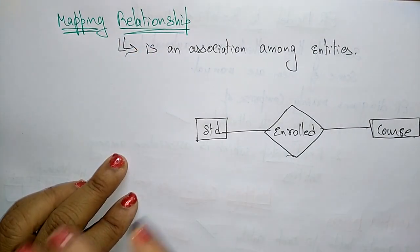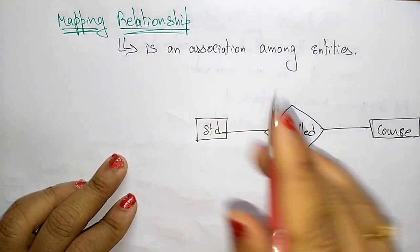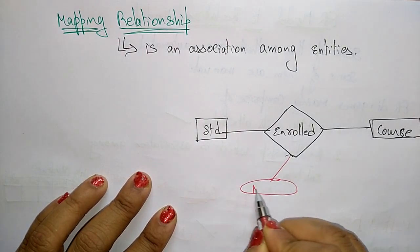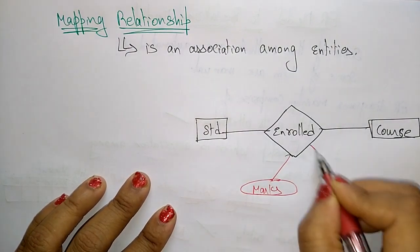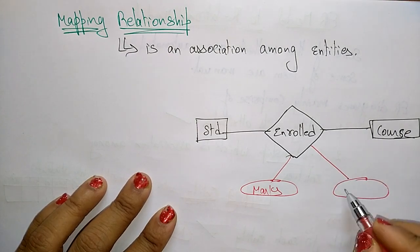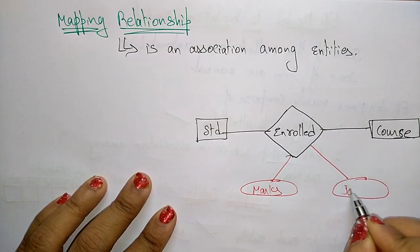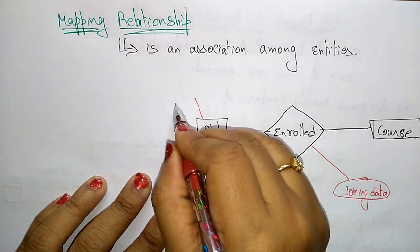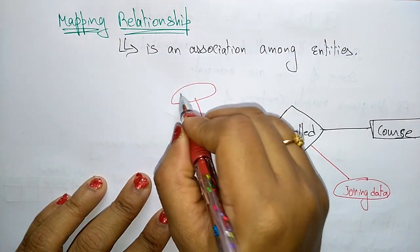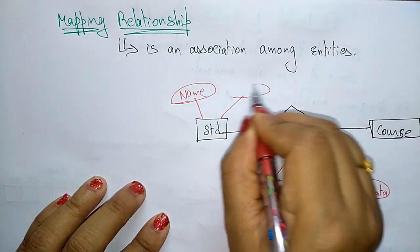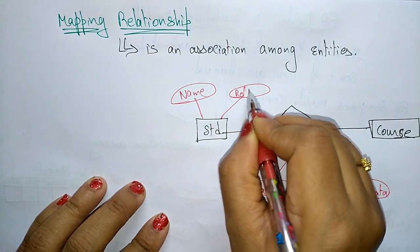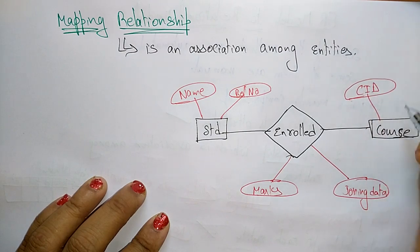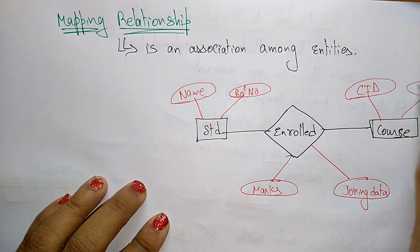In the previous video, I explained the mapping entity. Now, coming to the mapping relationship. The attributes of enrolled are marks and joining date. The attributes are also called as the fields. For student, the attributes are name of the student. And for the course, the attributes are course ID and then title of the course.